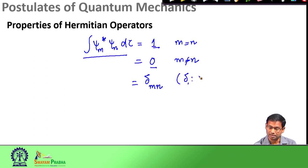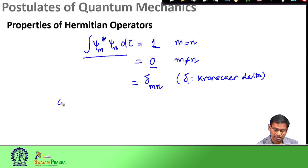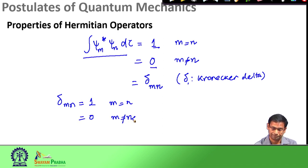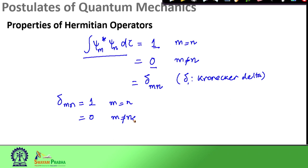This is given in shorthand as a Kronecker delta: δ_mn, where δ_mn equals 1 when m equals n, and 0 when m is not equal to n. So in this present discussion we saw that there are two important properties of Hermitian operators: first, the eigenvalues of the Hermitian operator are all real; second, the eigenfunctions of a Hermitian operator are orthonormal — meaning they are orthogonal to each other and individually normalized.